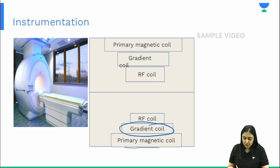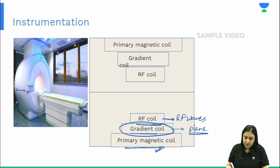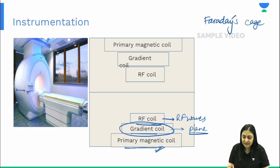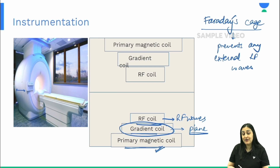The MRI machine has three coils: the primary magnetic coil, the gradient coil, and the RF coil. The RF coil supplies the radio frequency waves, and the gradient coil determines the plane of acquisition. Around the machine we have a Faraday's cage, which is part of MRI instrumentation. It prevents external radio frequency waves from disrupting the machine and interfering with the signal.